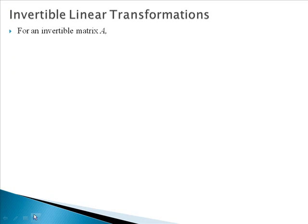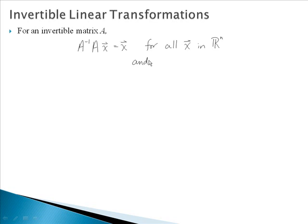Let's look at invertible linear transformations. For an invertible matrix A, we know that we can multiply our matrix A on the left by the inverse and basically get back to the vector x for all x in Rn. Similarly, we can multiply on the right by A inverse and get back to x for all x in Rn.